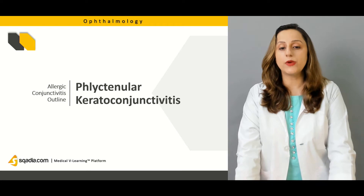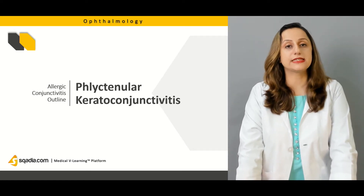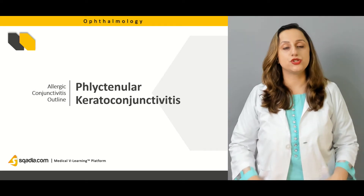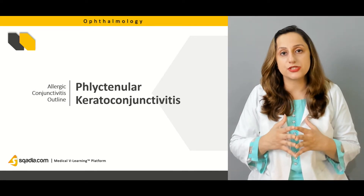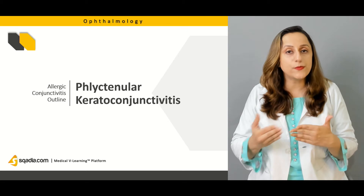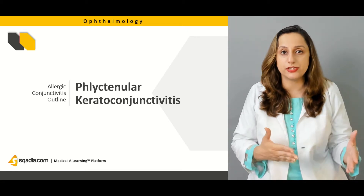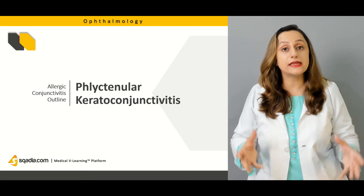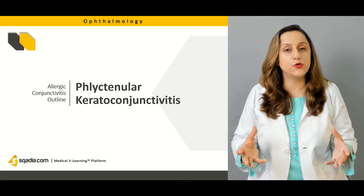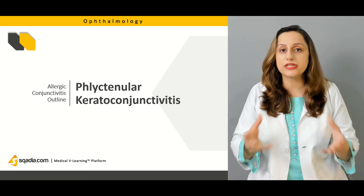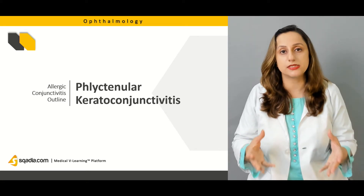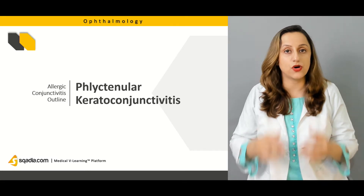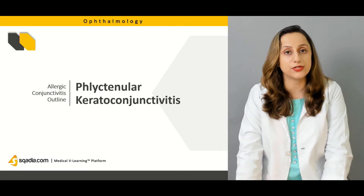We have another variant known as phlyctenular keratoconjunctivitis. It is initiated due to a type 1 and type 4 sensitivity reaction, and it is more prevalent in the younger age group — malnourished children living in poor, overcongested, or overpopulated conditions can basically flare up this kind of phlyctenular keratoconjunctivitis.